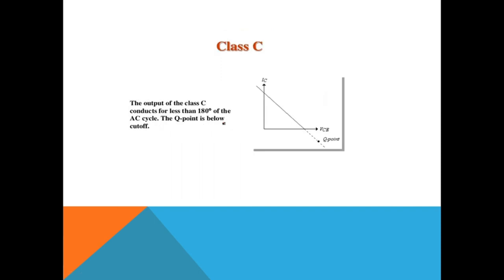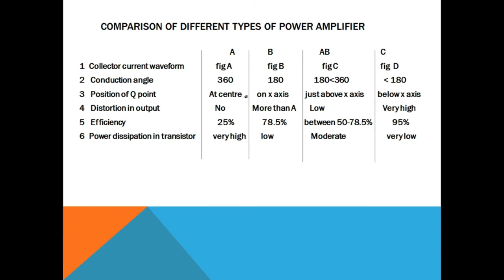Last is class C power amplifier. In class C, the Q-point is adjusted below the cut-off region, or below the X-axis. Therefore, the transistor will conduct less than 180 degrees. The distortion is more, but the efficiency is highest among all types of power amplifiers. We will now compare class A, class B, class AB, and class C power amplifiers on the basis of different parameters.